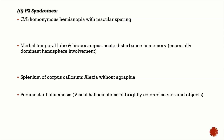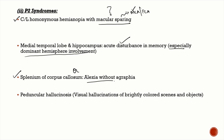The P2 segment supplies the temporal and occipital cortex. P2 syndrome presents with contralateral homonymous hemianopia with macular sparing, because the occipital pole has dual blood supply from both MCA and PCA. Temporal lobe and hippocampal involvement causes acute memory disturbance, especially with dominant hemisphere involvement, though this usually resolves. When the splenium of the corpus callosum is involved, alexia without agraphia occurs — a very important MCQ point. Peduncular hallucinosis may also occur, with brightly colored visual hallucinations.